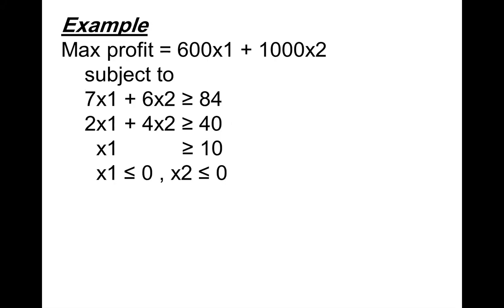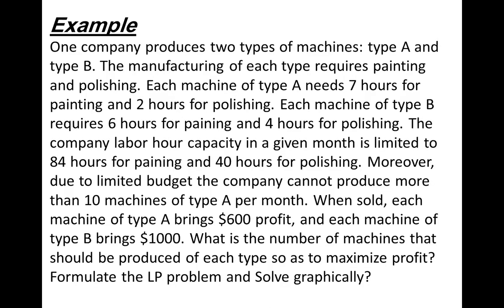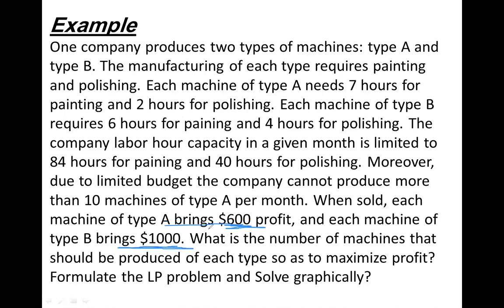Then we extract the information and form the linear programming: we create the objective function — maximize profit equal to 600x1 plus 1000x2. The profit for Type A is 600 for each machine, and the profit for each machine of Type B is 1000. So the objective function equals 600 times the number of machines from Type A plus 1000 times the number of machines of Type B.